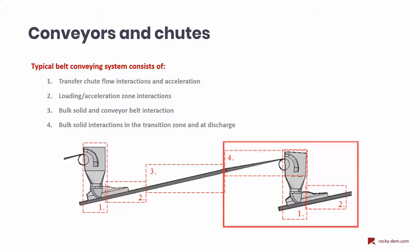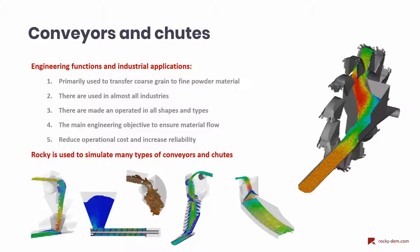DEM simulations for transfer chutes are usually focused on the rightmost portion of this drawing. These are equipment used to transport many types of granular material, from coarse grain to very fine powders. Such equipment is used in almost all industries where granular material needs to be transported. Since this equipment can be seen in a wide range of industries, it makes sense that they have many different types and shapes. Still, all of them share the same main engineering objective: to ensure material flow, reduce operational cost, and increase process reliability. And with Rocky, we can simulate many types of conveyors and chutes.